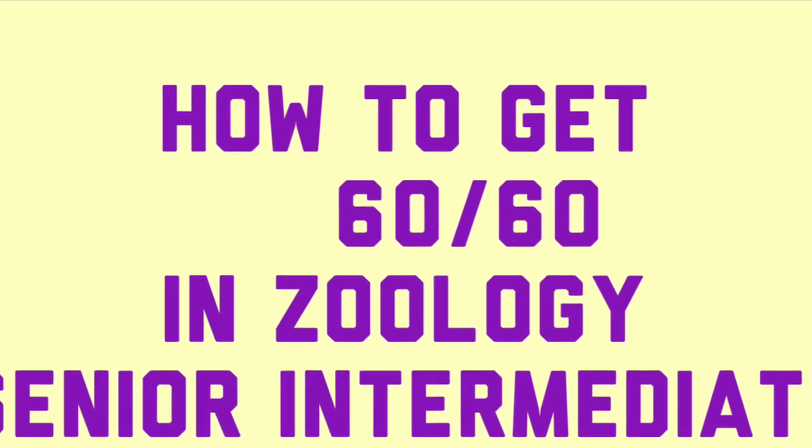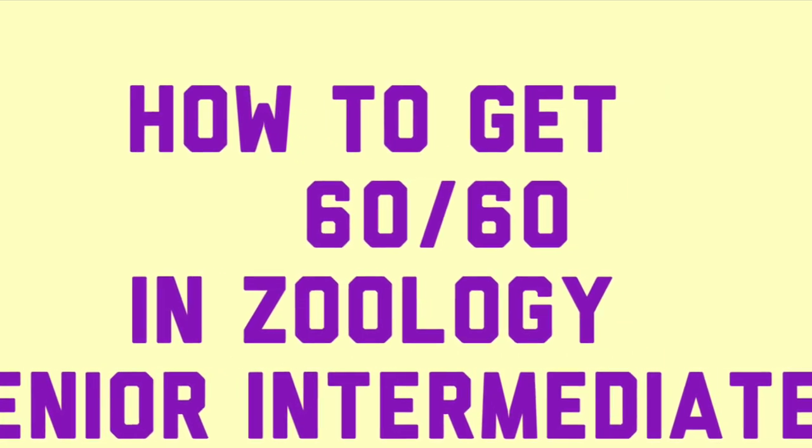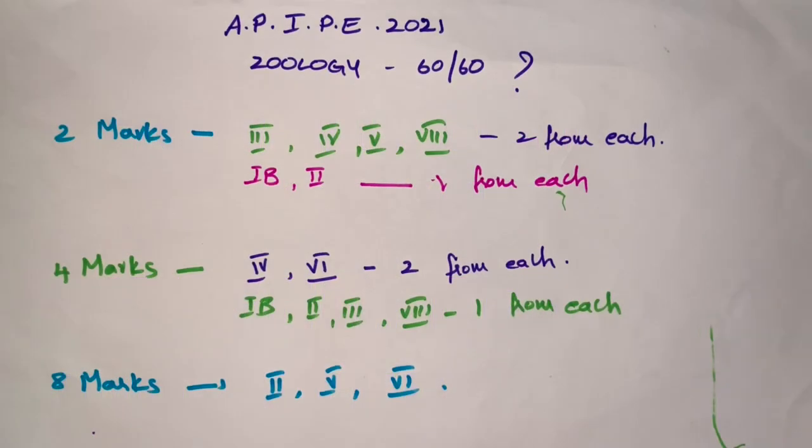According to the weightage given by the BIA Vijayawada, to get 60 out of 60 marks in zoology, you have to concentrate on two marks questions. Section A contains the two marks questions—10 two marks questions. You have to write all the two marks questions, so there is no choice in Section A.